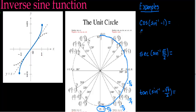So I can rewrite the expression as the cosine of negative π/2, because the inner piece — the inverse sine of negative 1 — equals negative π/2. Now I've found the angle, and I can find the cosine of that angle. Since I'm now using normal cosine, I don't need to worry about the inverse sine range. The cosine at negative π/2 is the x-coordinate on the unit circle, which is 0. So the answer to this composite function is 0.